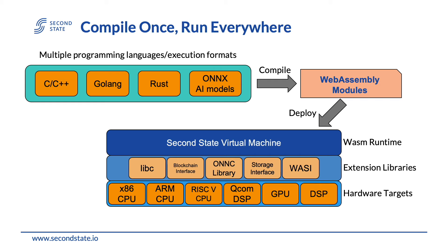For example, Emscripten, Binaryen, and LLVM provide a way to compile C and C++ programs into WebAssembly modules. Besides, even AI models, which are not a programming language, can also be compiled into WebAssembly modules. If you are interested, you can use the ONNX compiler to do that.